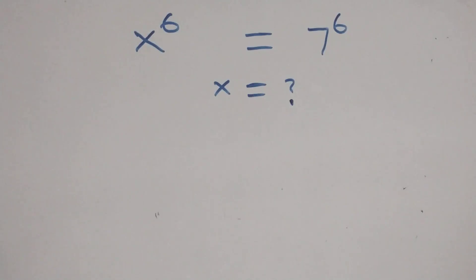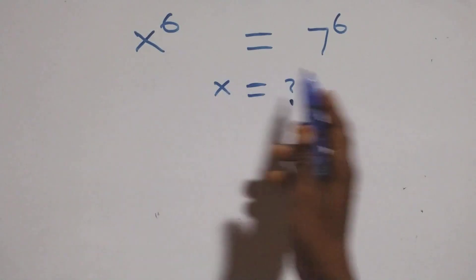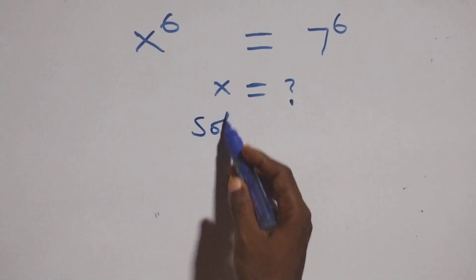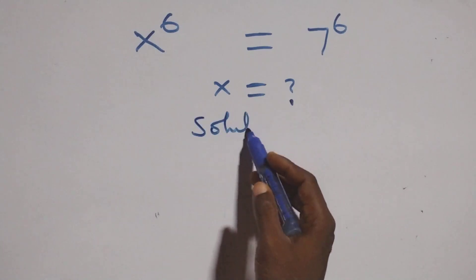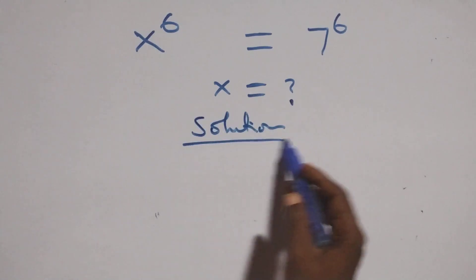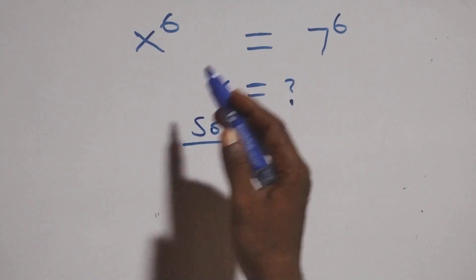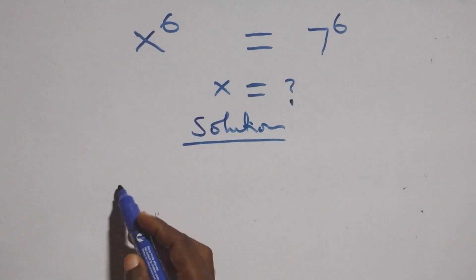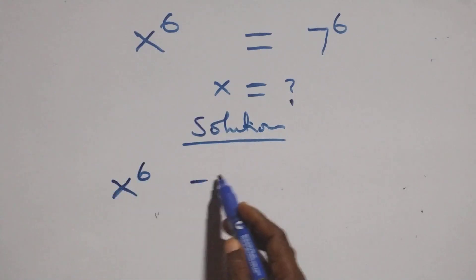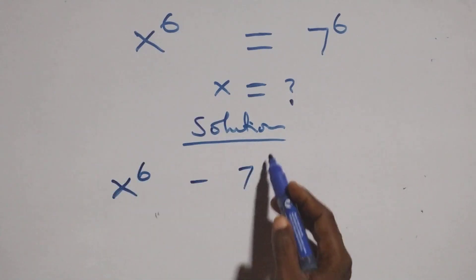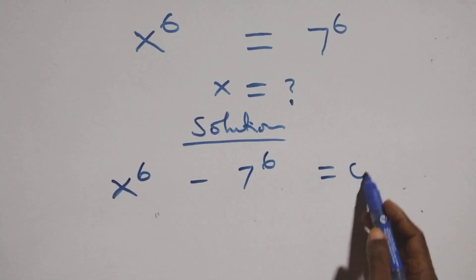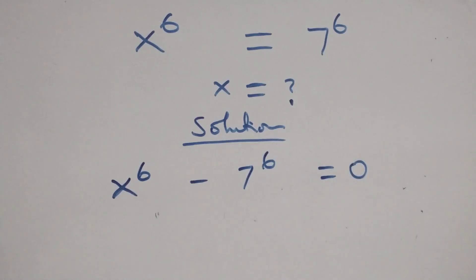Hello, you are welcome. How to solve this nice exponential equation — the solution from here. Now what we have here: we take 7 raised to the power 6 to the left hand side and we have x raised to the power 6 minus 7 raised to the power 6, then equals to 0.